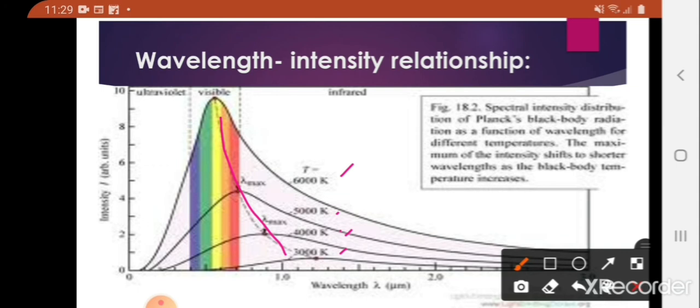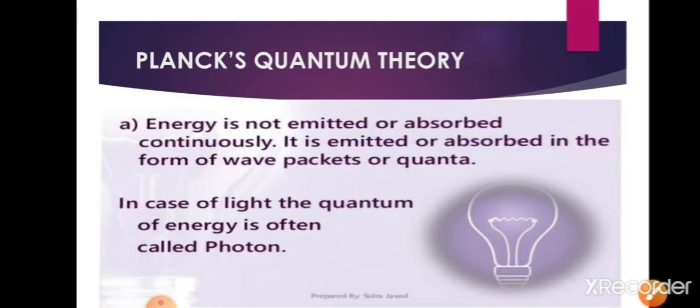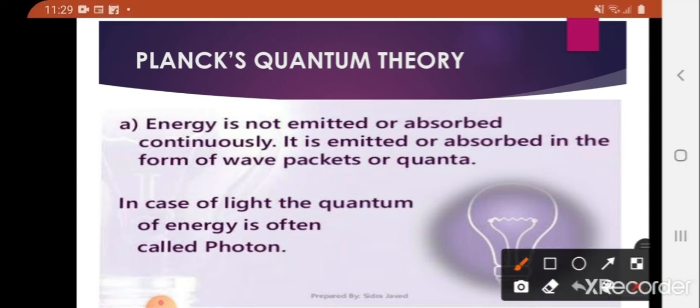This inverse proportionality of intensity to wavelength cannot be explained by the wave theory of light. For that, Max Planck suggested that atoms and molecules could emit or absorb energy only in discrete quantities.